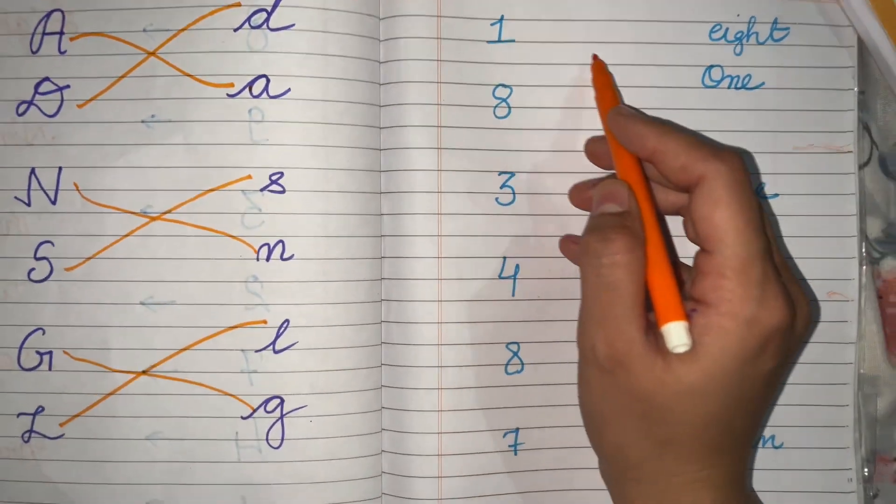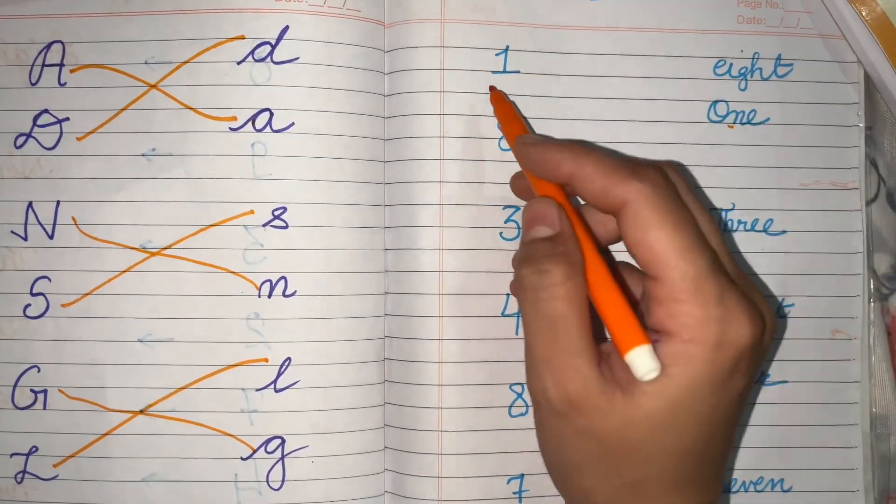So this is 1. What's the spelling of 1? O-N-E-1. So we'll match it with the 1.